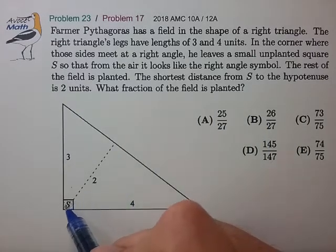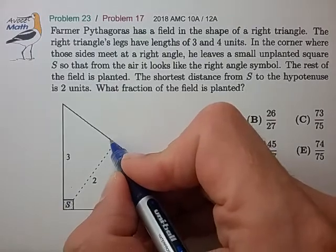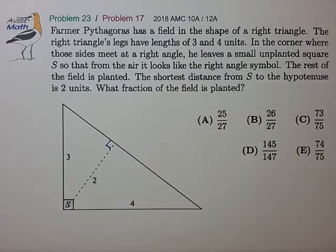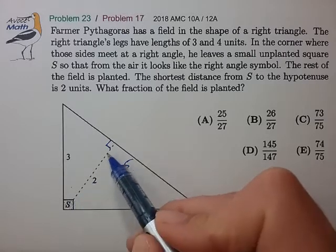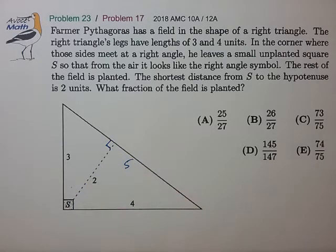Okay, so we have this distance of 2 to the hypotenuse. That's a right angle. We have a 3, 4, 5 right triangle. And it seems like the first task would be to take this distance of 2 and move it someplace a little more useful.